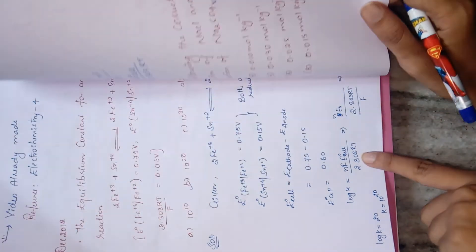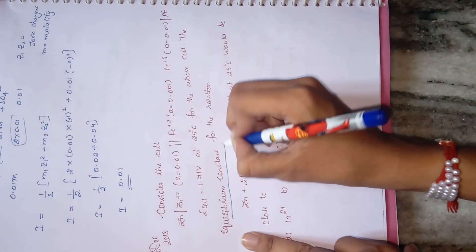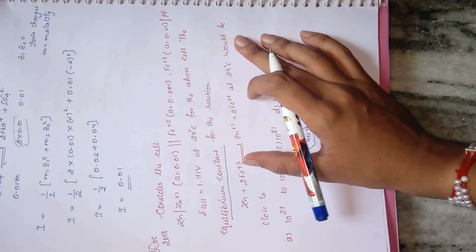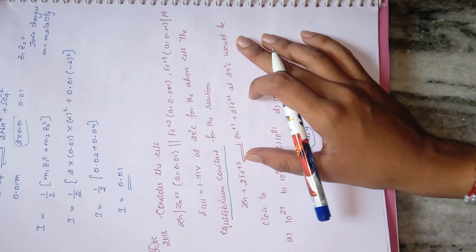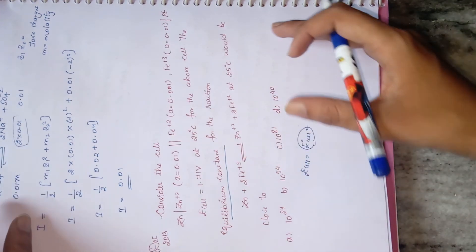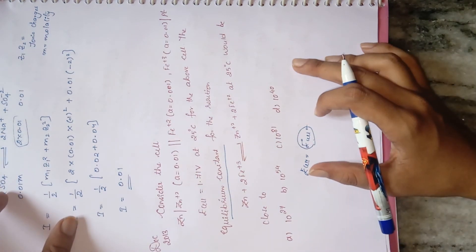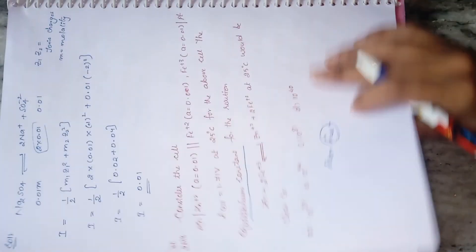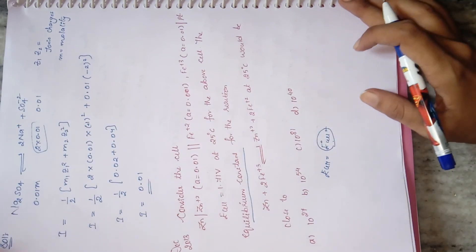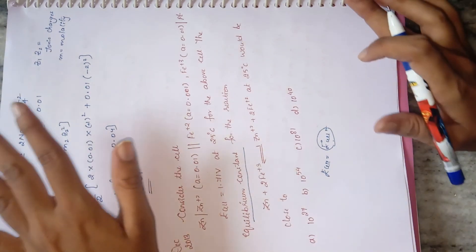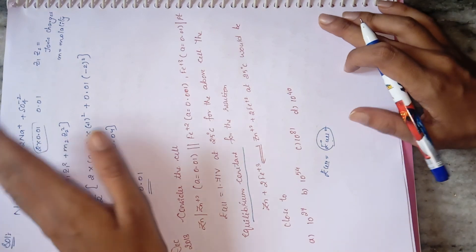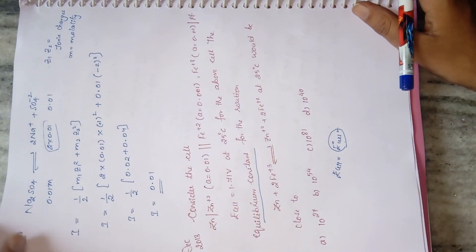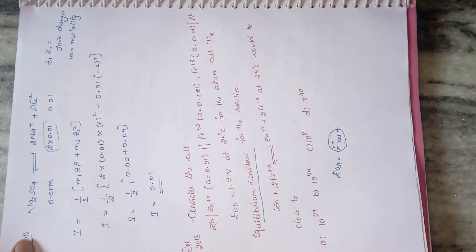Once you get E°cell, use log K = nF × E°cell / (2.303RT) to calculate the equilibrium constant. I request you to solve this question on your own, as electrochemistry questions are the easiest and take the least time in the exam. Please comment your final answer below. These six questions, combined with my electrochemistry video series, are sufficient to complete electrochemistry for CSIR June 2018. Thank you.